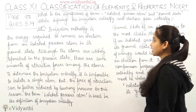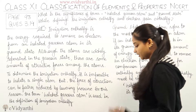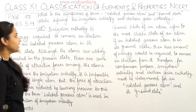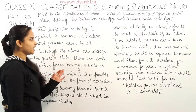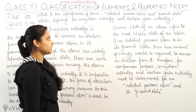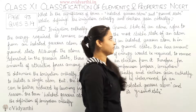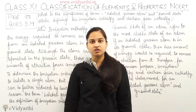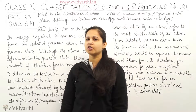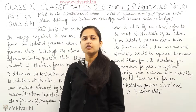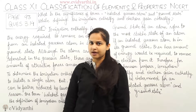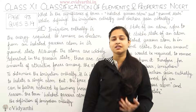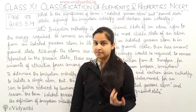The question is: what is the significance of the terms 'isolated gaseous atom' and 'ground state' while defining the ionization enthalpy and electron gain enthalpy? When we are defining ionization enthalpy or electron gain enthalpy, we most often use the terms 'isolated gaseous atom' and 'ground state.' So what is the significance of these two terms?